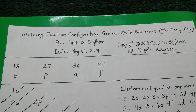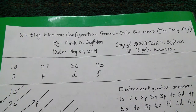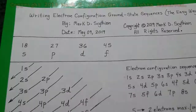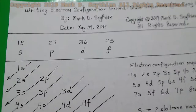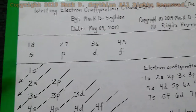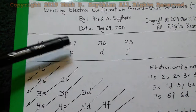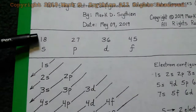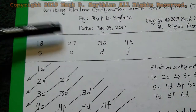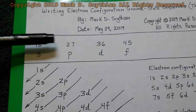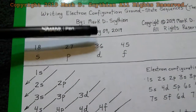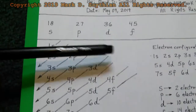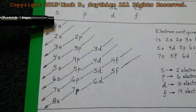There's a much easier way to write electron configuration ground state sequences, and that begins by establishing these numeric codes: 18, 27, 36, 45. This designates 1 through 8 for the S orbital, 2 through 7 for the P orbital, 3 through 6 for the D orbital, and 4 through 5 for the F orbital.